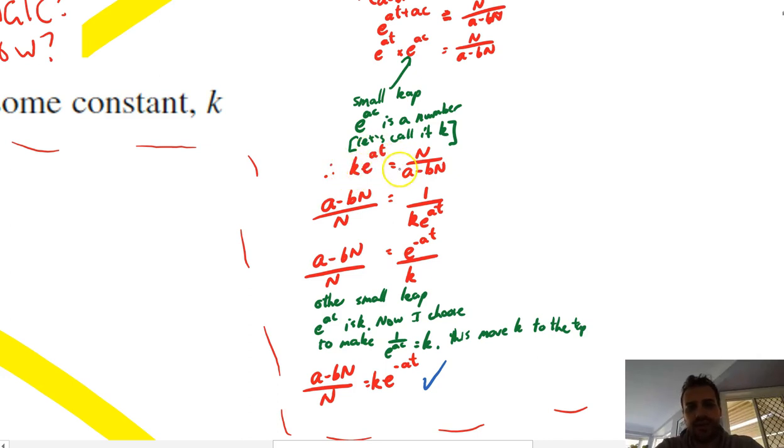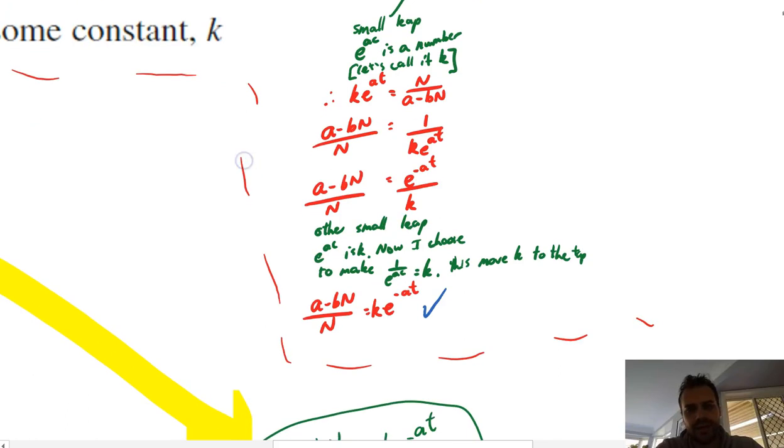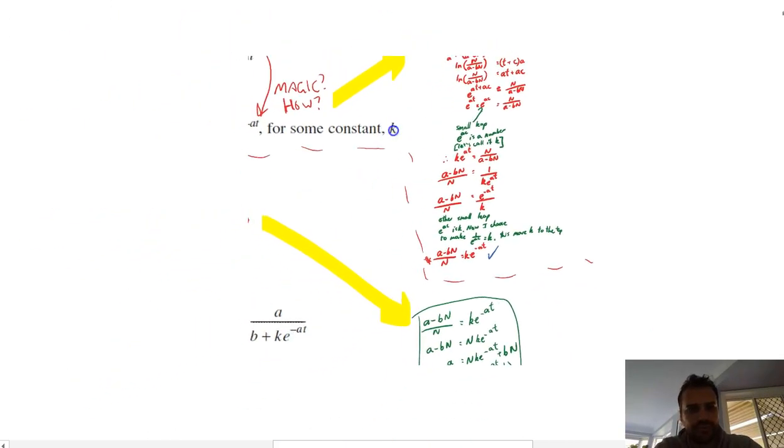Okay, e to the a t equals n over a minus b n. Now, we can rearrange this. A little bit of rearranging here, here, and then here. And then what you can, what, I just make one more small leap here. We said e to the a c is k. But that was like an arbitrary constant. So what I've chosen to do, I choose to make one over e to the a c k instead. So that just brings this k from here up to the top. And there's my, there's my finish point here. So that was the steps to get from this line to this line.